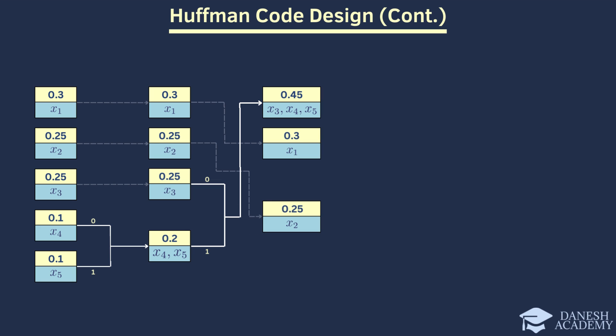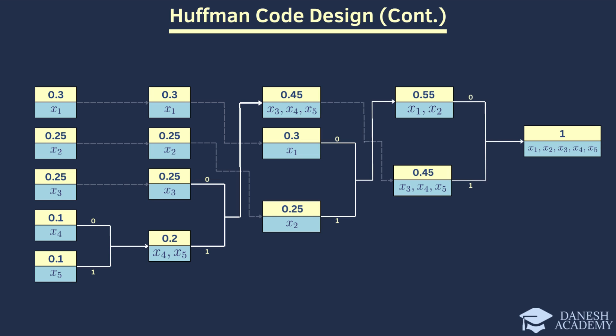After sorting the probabilities, the last two probabilities, 0.25 and 0.3, are assigned the values 0 and 1 respectively and added together. The sum of these two is 0.55 which is higher than 0.45. Therefore, we sort it first, assign the two probabilities 0 and 1 and add them together. In the end, it is important to note that the sum of probabilities must be 1. Otherwise, we have made a mistake in the process.